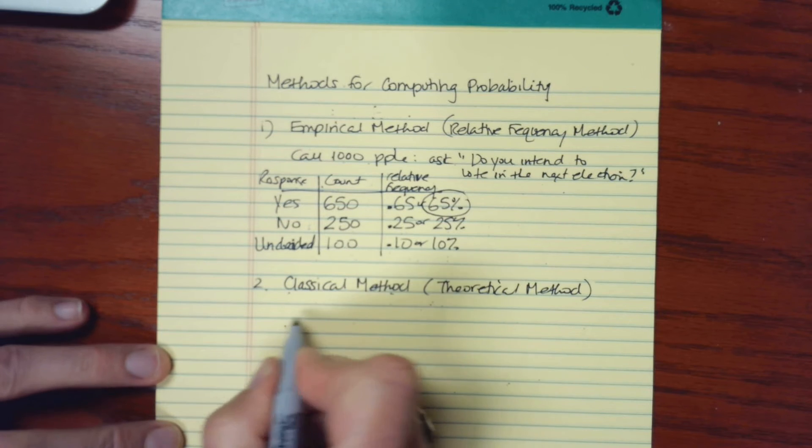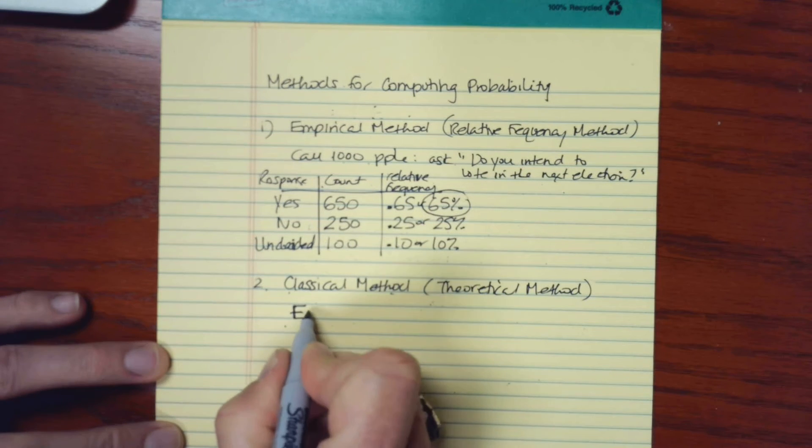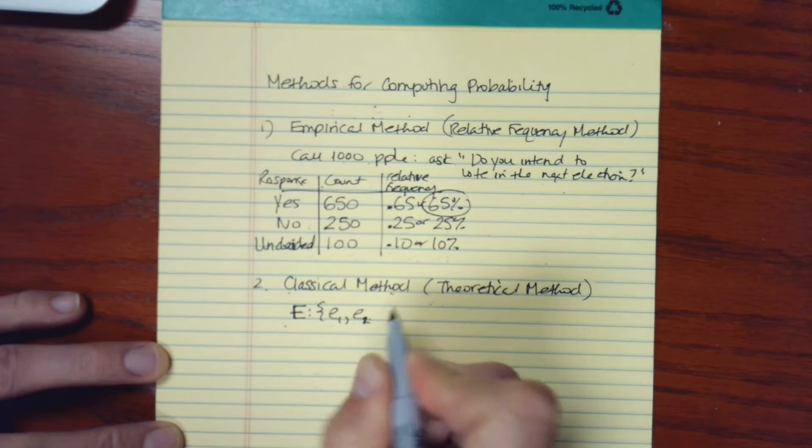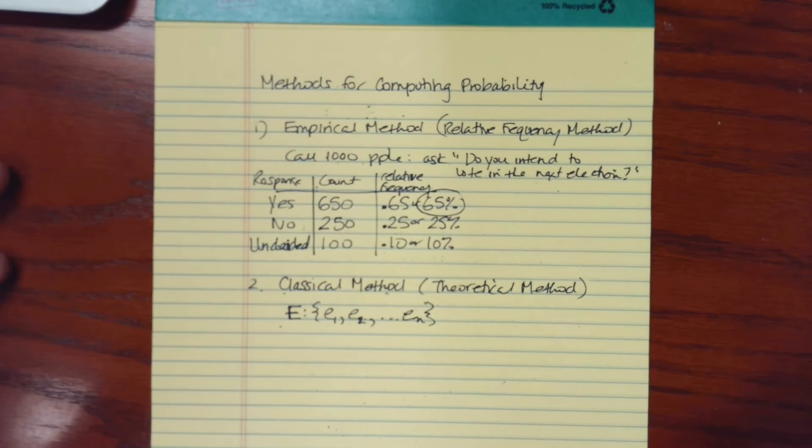So we will have an event, and I'm just going to call it E, and it has a certain number of elements in it. We'll say that there are N elements in this event, and then there's, of course, a sample space.